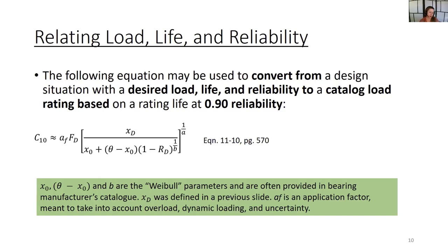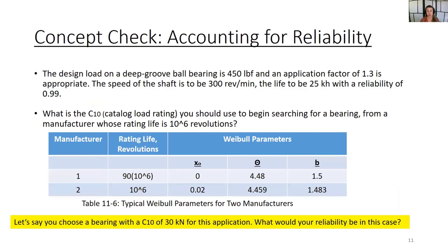In equation 11-10, X-naught, theta minus X-naught, and B are Weibull parameters, often provided in bearing manufacturer's catalogs. Weibull is just a different type of distribution — similar to a normal distribution defined by mean and standard deviation, Weibull parameters define a different curve shape. AF is an application factor meant to account for overload, dynamic loading, and any uncertainty; it's taken from tabulated values or experience. For the concept check using this new formula with Weibull parameters, you're going to stop, program your tool, and come back.